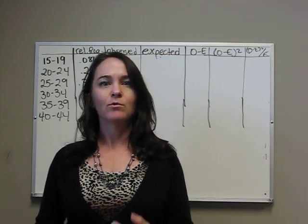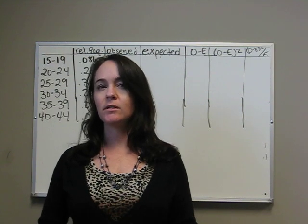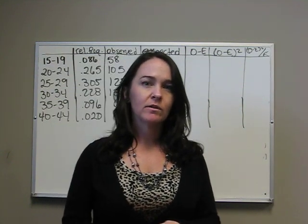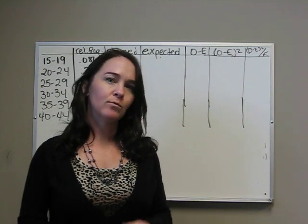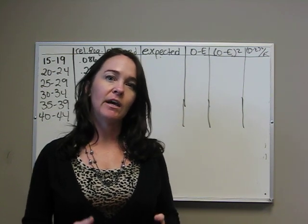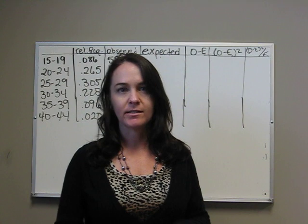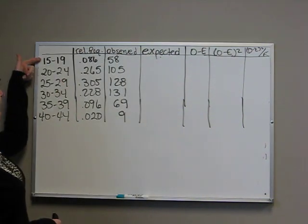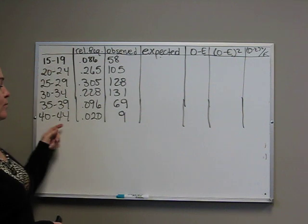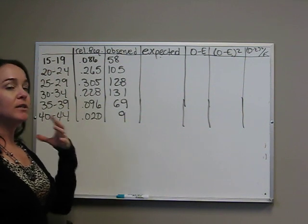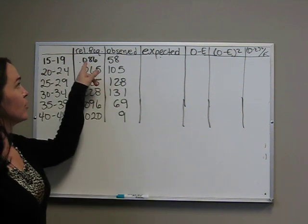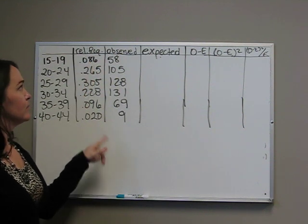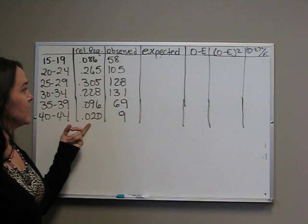You're always going to be given relative frequencies or probabilities or percentages of things occurring. So our scenario goes that we're wondering if the distribution of the age of mothers has changed since 1990. We know that we have ages 15 to 19, 20 to 24, all the way to 44, and this was in 1990.